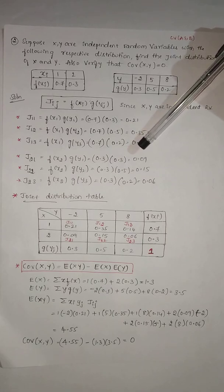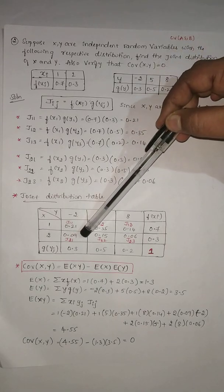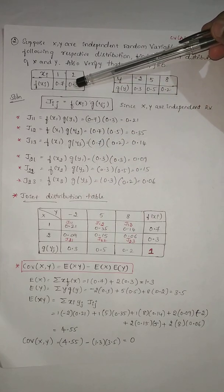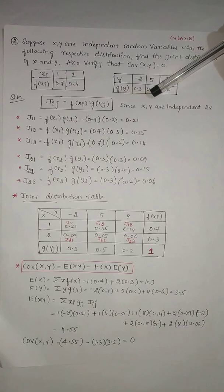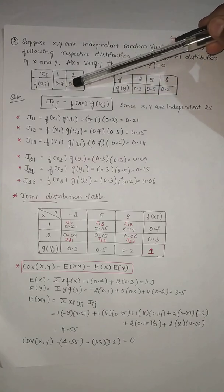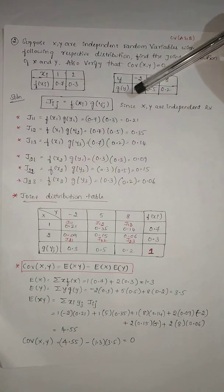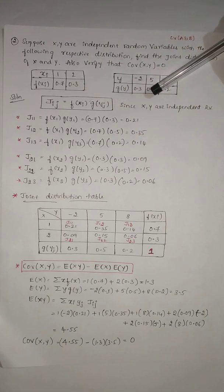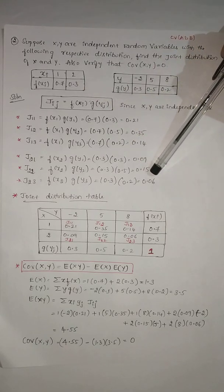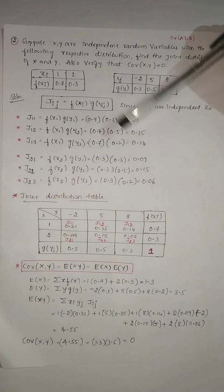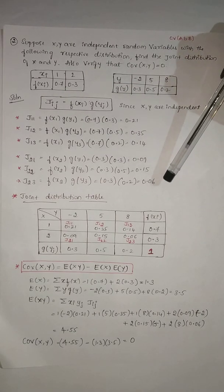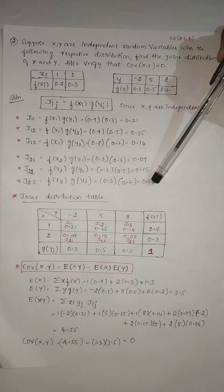In the same way, to find out j21, j22, j23, the value 0.3 is to be multiplied with all the values of g(y). So 0.3 into 0.3 gives j21, 0.3 into 0.5 gives j22, and 0.3 into 0.2 gives j23.